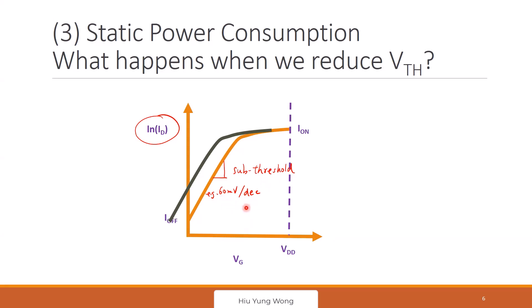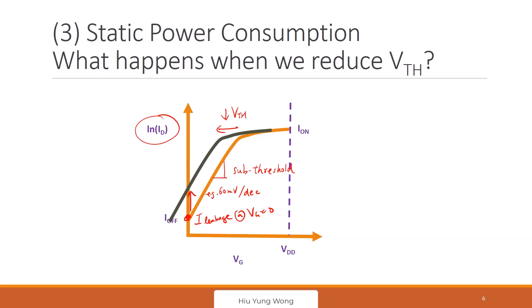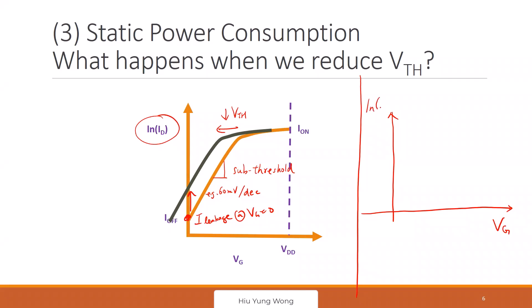I think this is very important because this is what digital circuit people are facing nowadays. If you reduce Vdd and then reduce Vth, the sub-threshold slope means the leakage current increases a lot. At Vg equal to zero, it increases substantially if you reduce Vth. The reason we moved to FinFET or silicon-on-insulator is partly because of this — we can achieve a better sub-threshold slope with those transistor technologies.